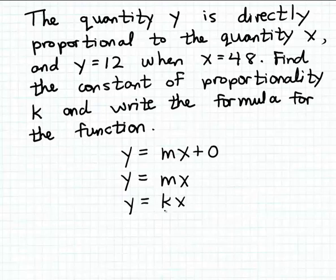We can find that constant of proportionality by utilizing the information given in the problem. We're told that y = 12 when x = 48. So I'm going to substitute those two values into my partial formula and solve the resulting equation for k.